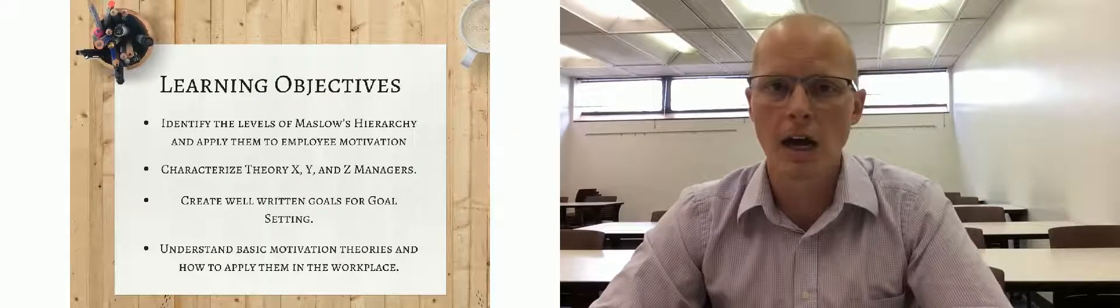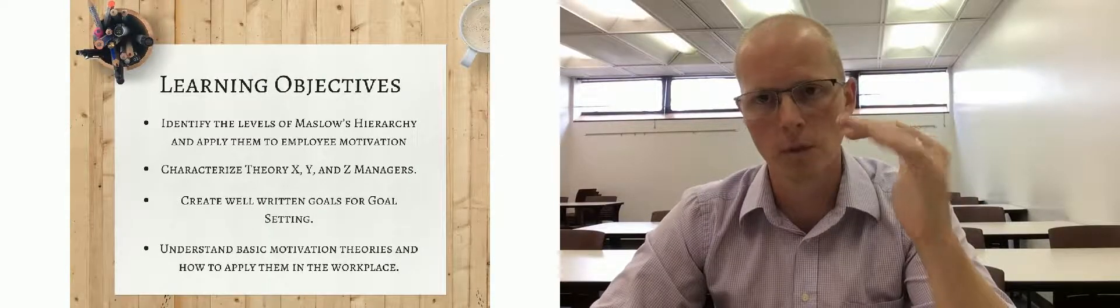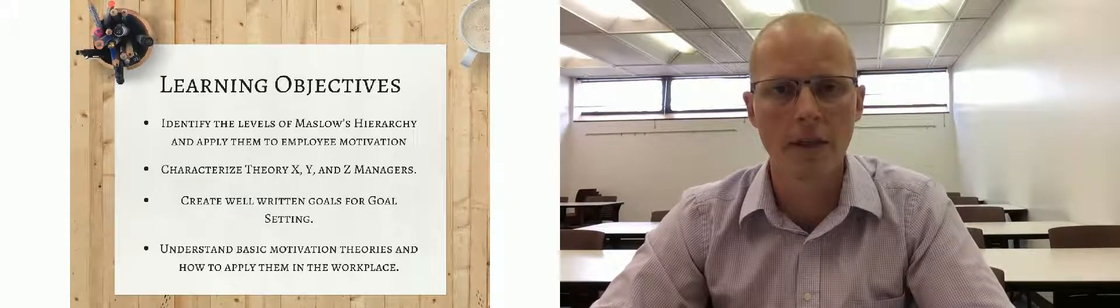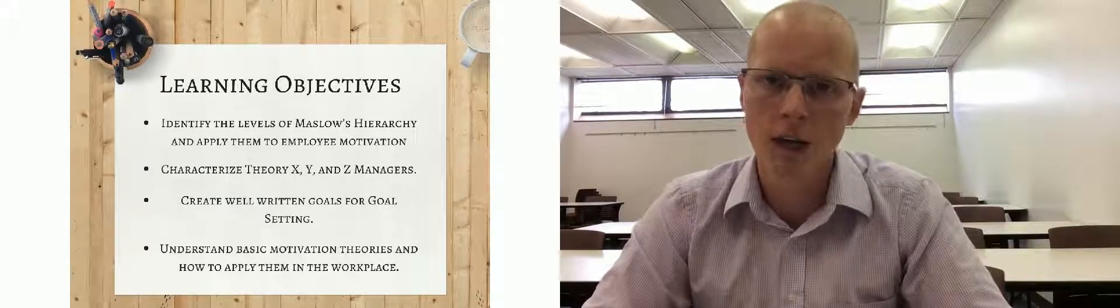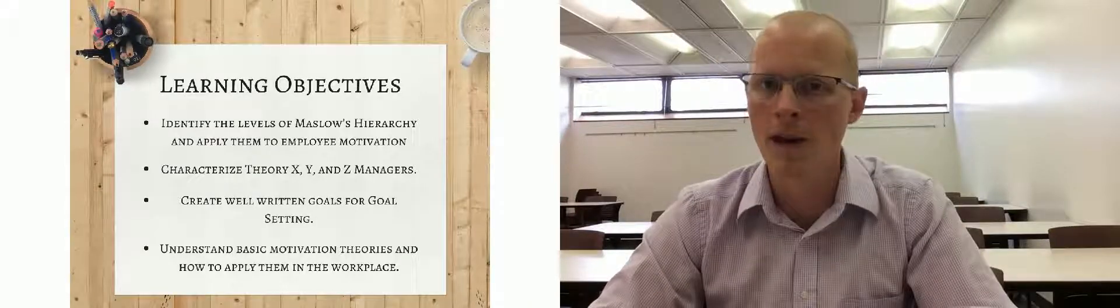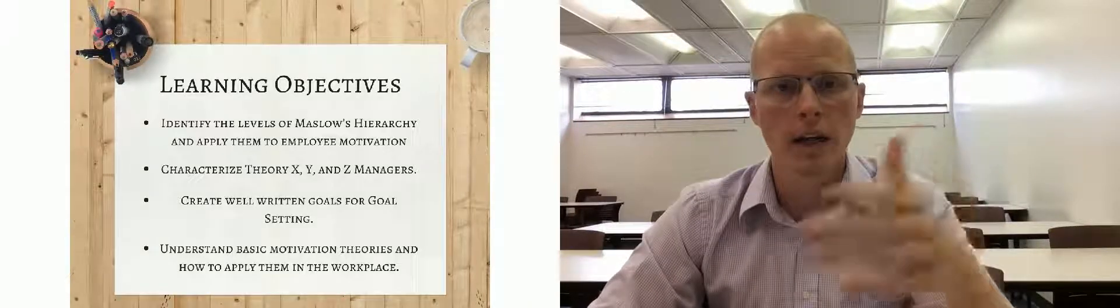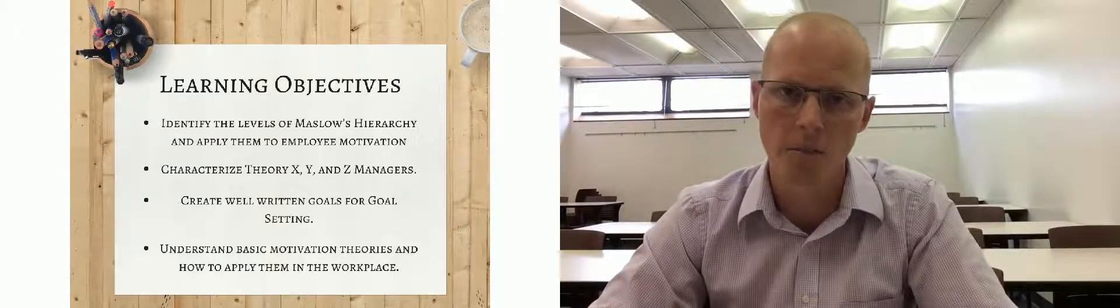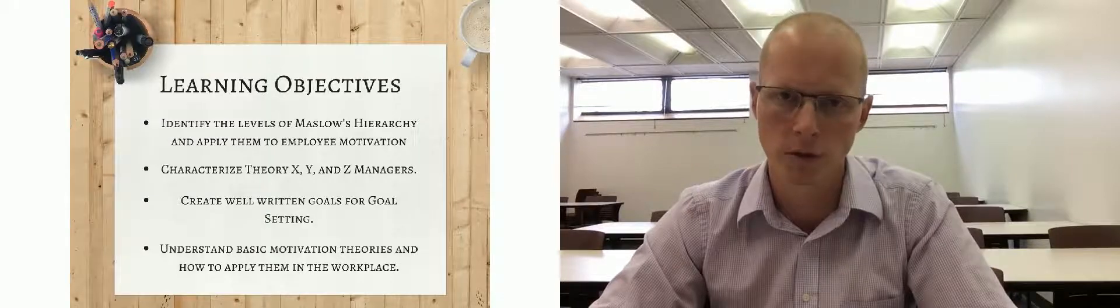When we look at Maslow, his five levels of hierarchy and how to apply them to employee motivation. You start all the way down at the base level and then you can get all the way to the top. One of the things we'll talk about on a class-by-class basis is how you cannot go up a level until those base needs have been met. That's the only way you're going to progress forward.